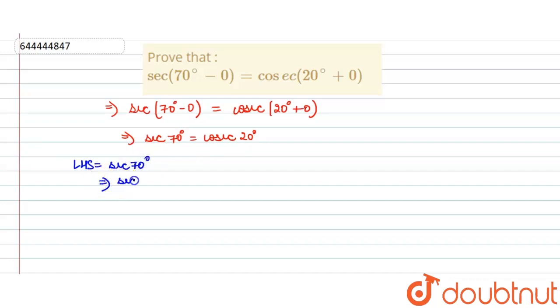We can write this sec of 70 degrees as 90 minus 20 degrees. Whenever we write sec of 90 minus theta, it equals cosec theta.